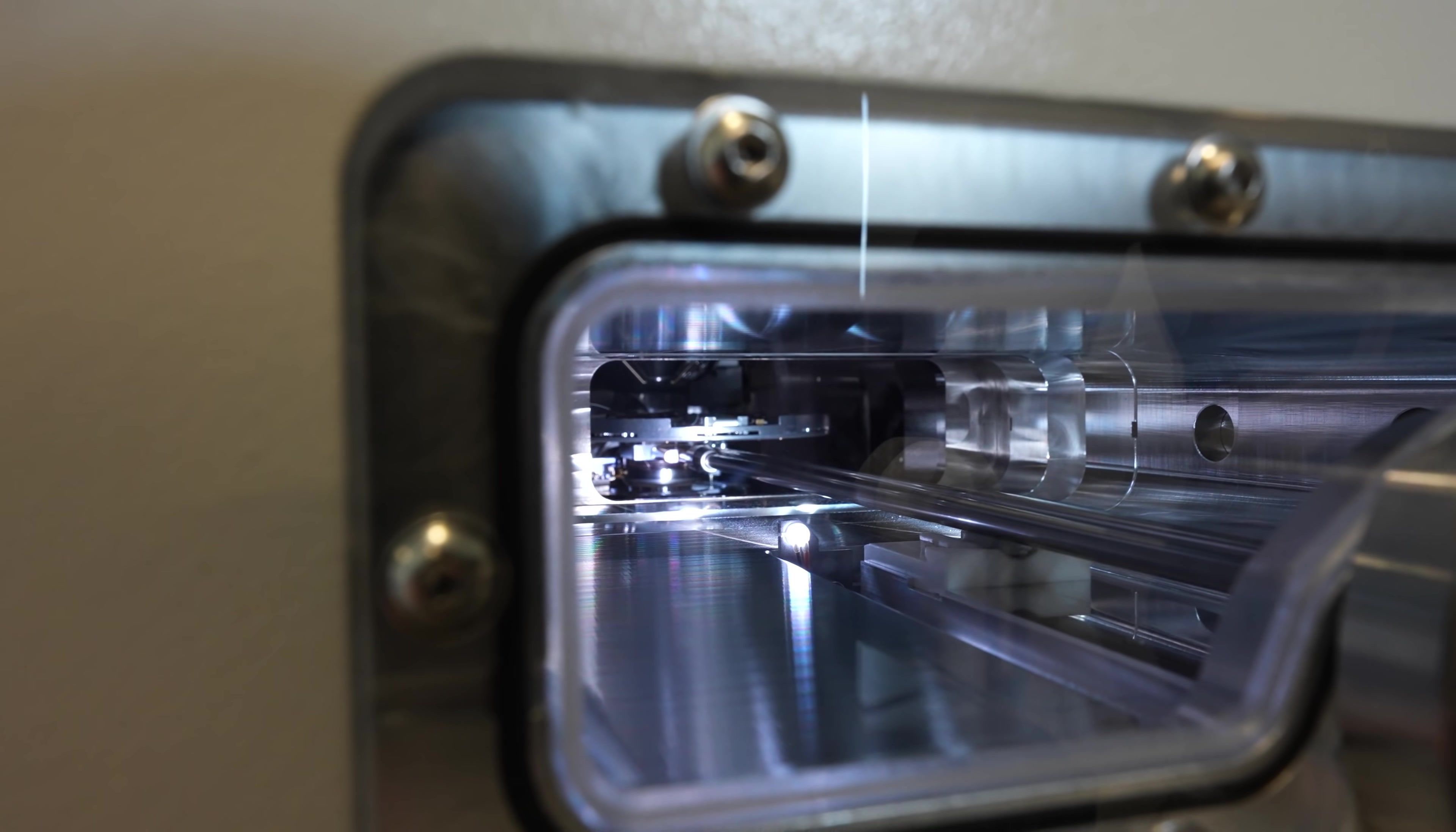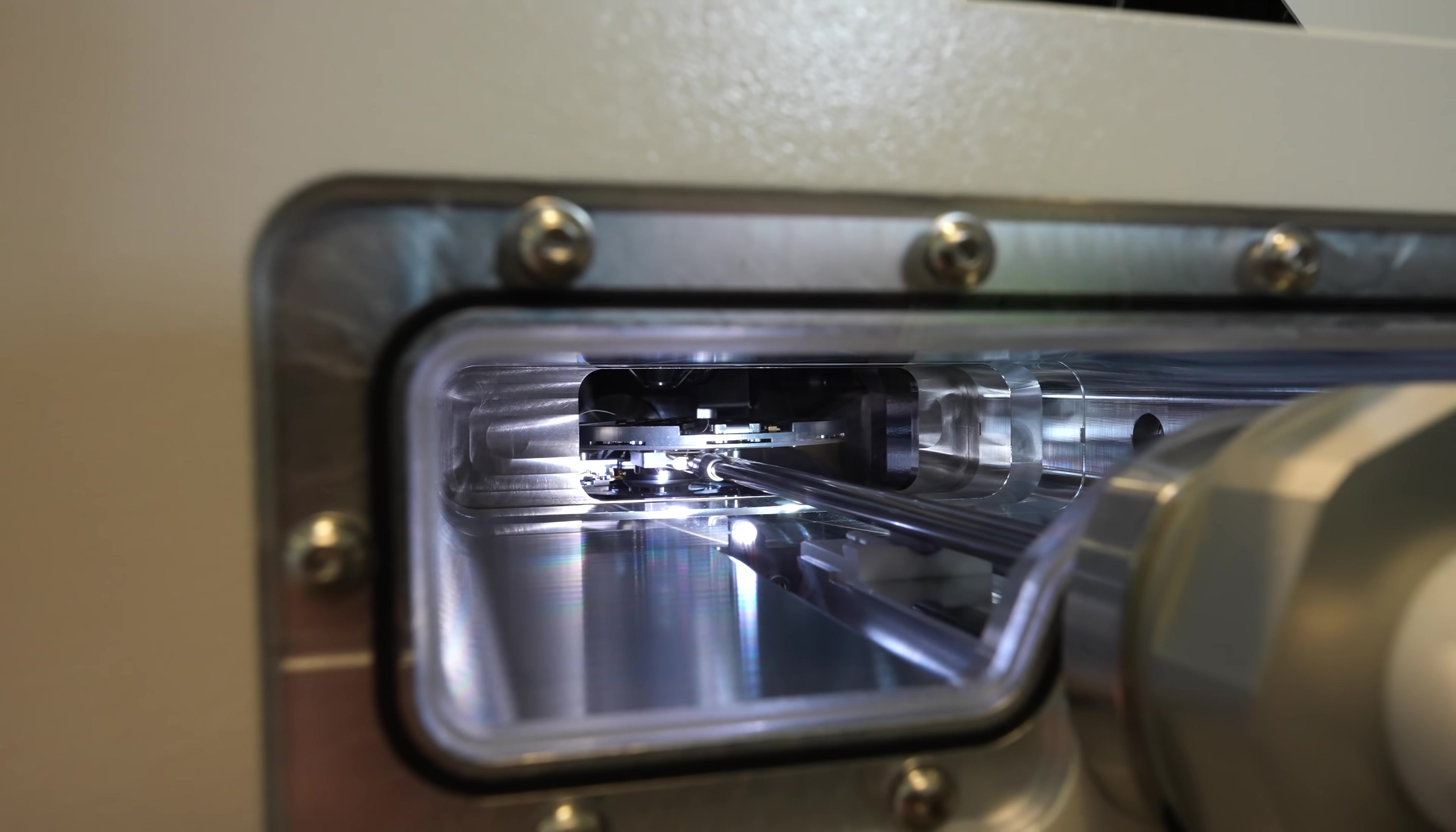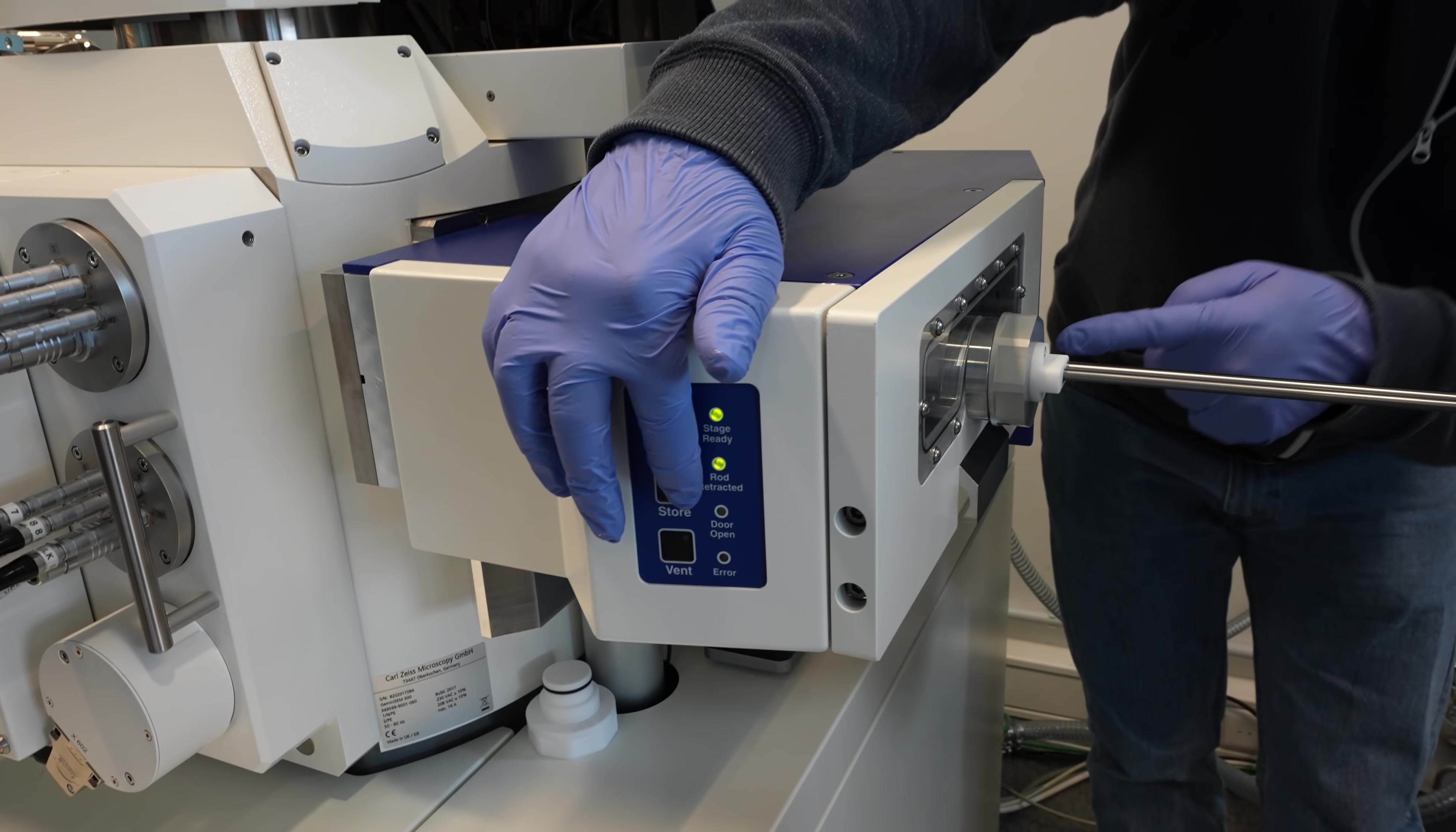On the side of the SEM we have this vacuum lock or dock where we can enter the probing shuttle into the SEM. This way we don't have to re-establish the vacuum inside the entire SEM, just in the lock itself. At the same time it also minimizes unwanted particles inside the main chamber, especially the hydrocarbons.